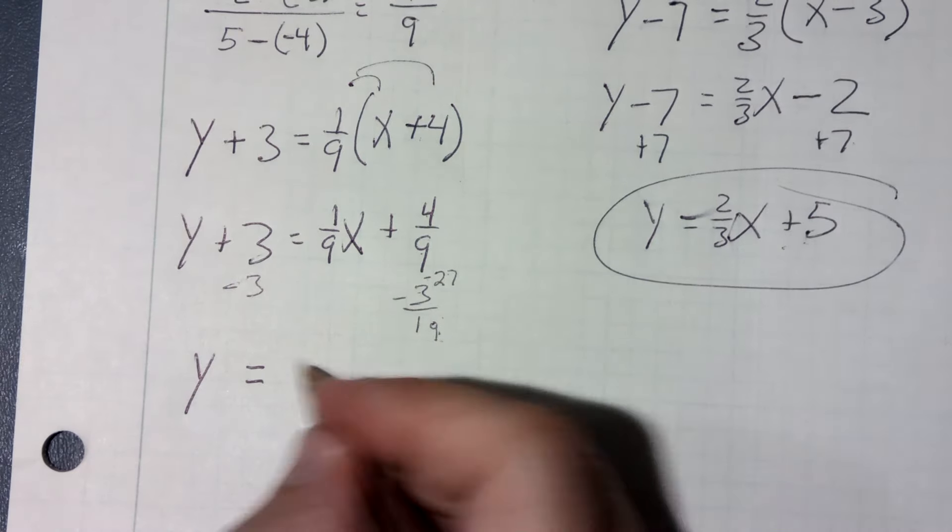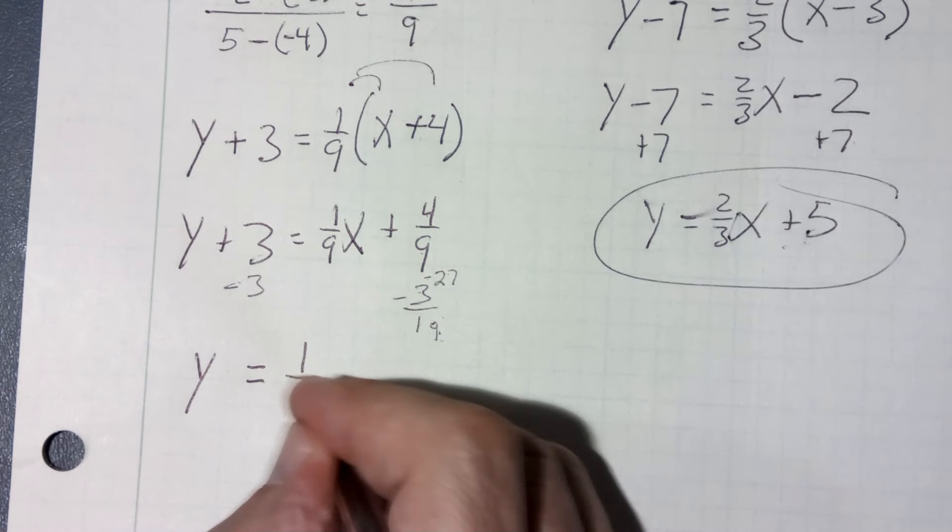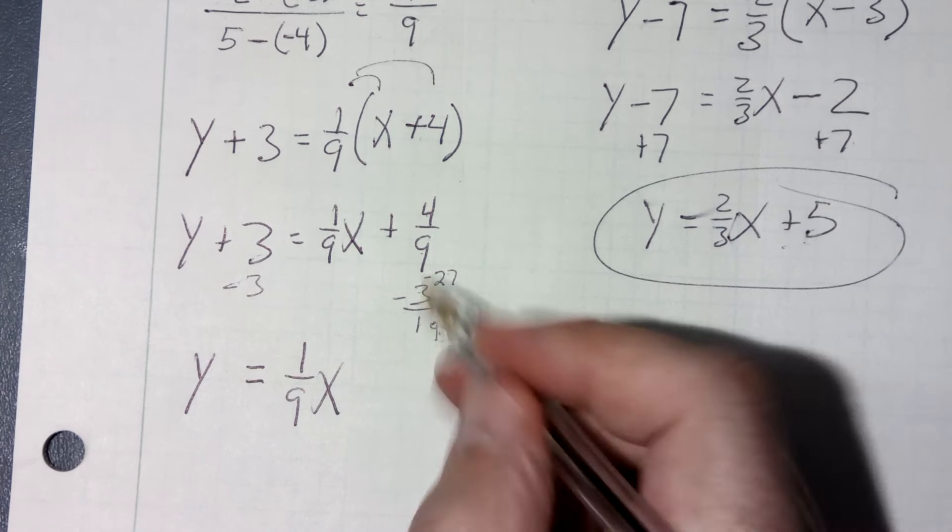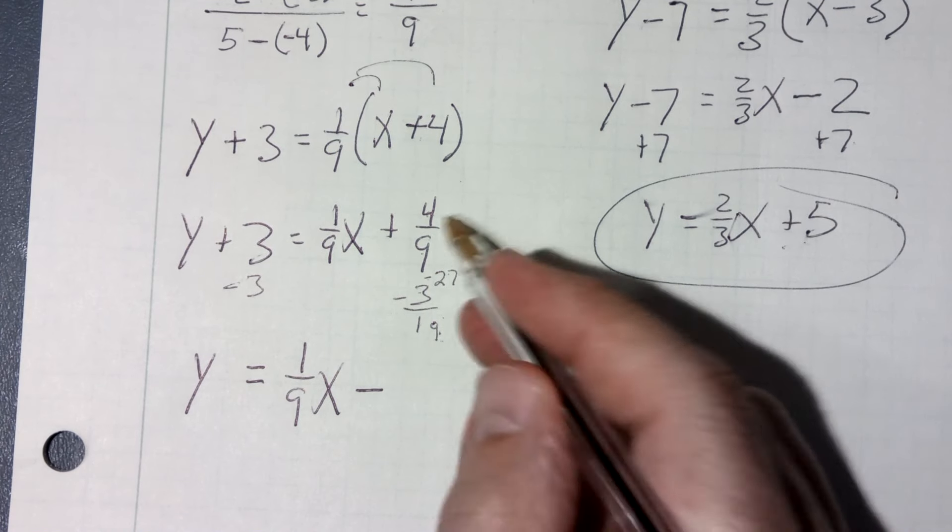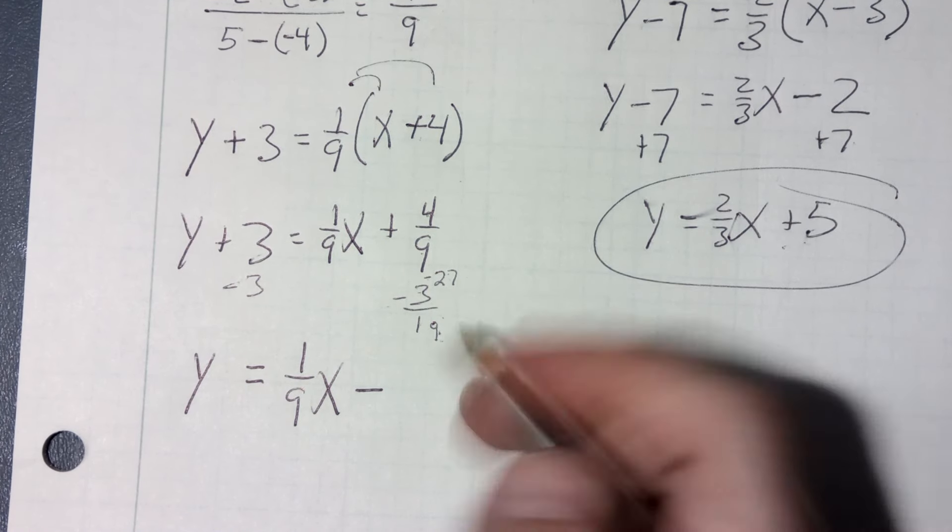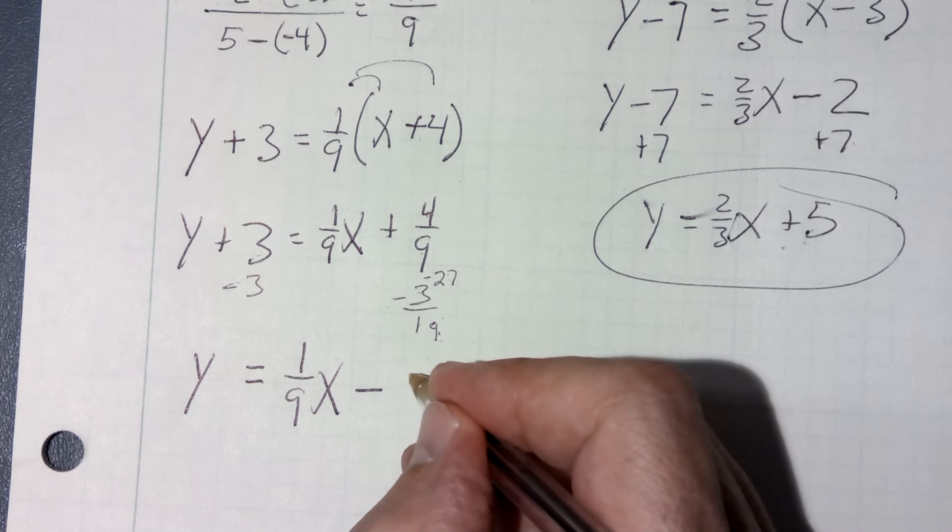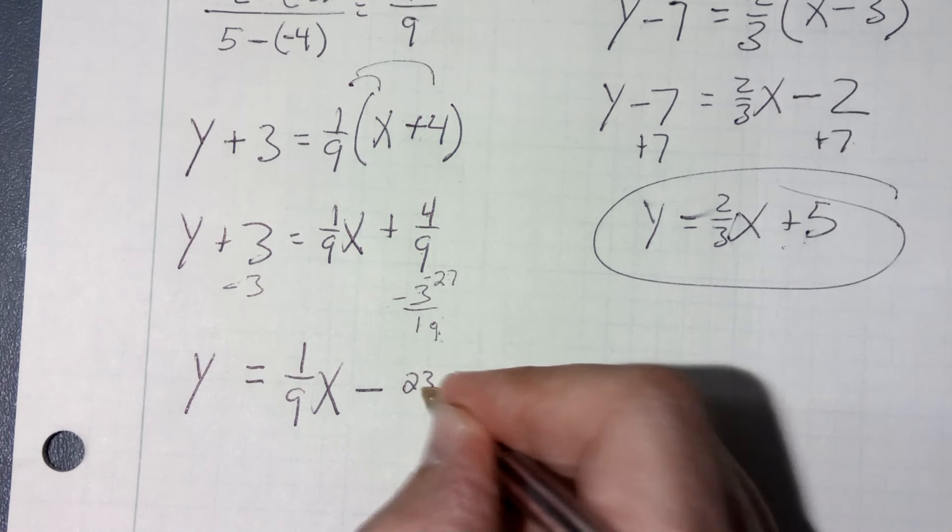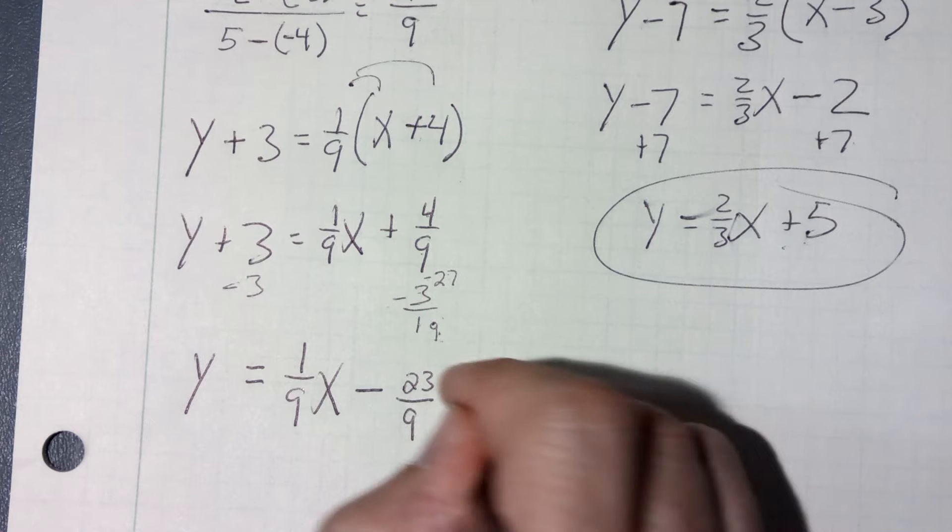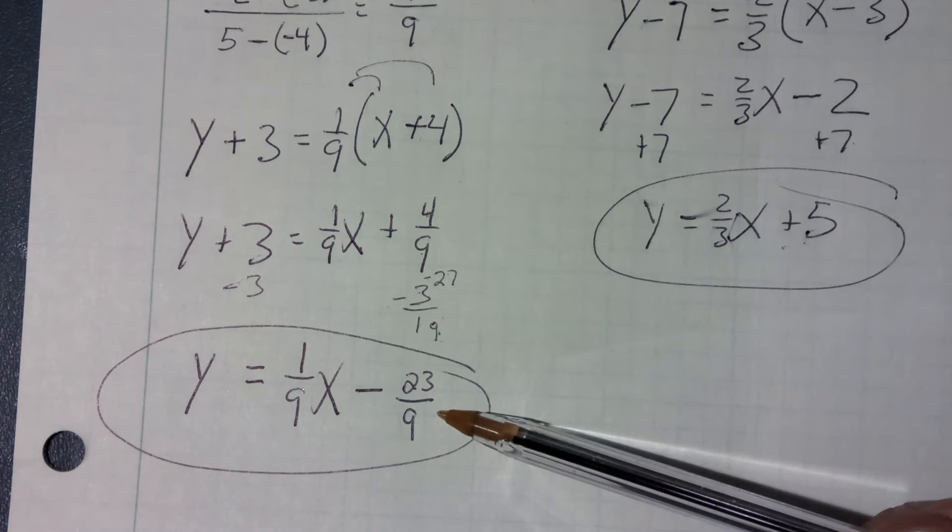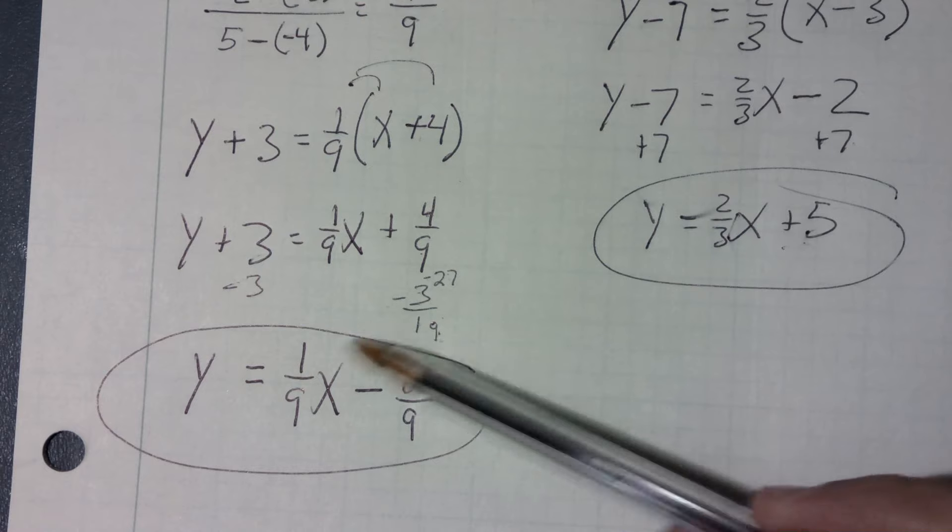By the way, I have that slope of one ninth x. And then I'm going to have a negative, four minus the 27 is negative 23 ninths. And there's my final solution where my y-intercept is a negative 23 ninths. My slope was one ninth.